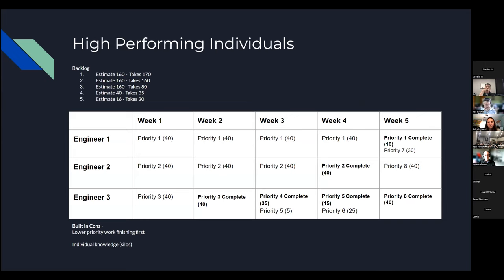If we have a product backlog where the top three items are estimated at 160, the fourth at 40, and the fifth at 16 — the typical agile approach is one engineer takes priority one, the next takes priority two, and so on. In a five-week sprint, engineer one spent four sprints on priority one, delivering at 170 hours. Engineer two completed priority two in exactly four weeks. Engineer three finished priority three at 35 hours, then moved to priority four. So lower-priority items end up finishing first, and you develop individual knowledge silos within the team.